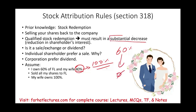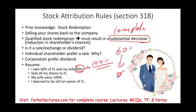Is this a substantial decrease? That's not only substantial — it's a complete reduction of my shares. But in form it appears so; in substance, it does not. In substance, I'm deemed to still own Farhat Lectures — I still own 100% through my wife. So although I sold the shares and appear to be out, I'm deemed an owner through my wife. This is what the stock attribution rules address.